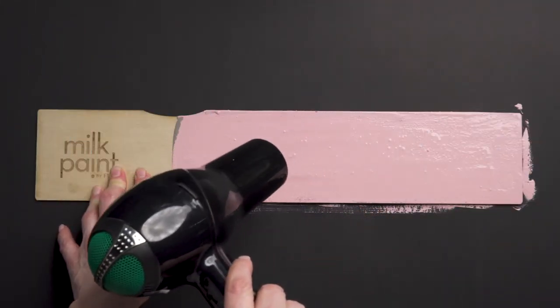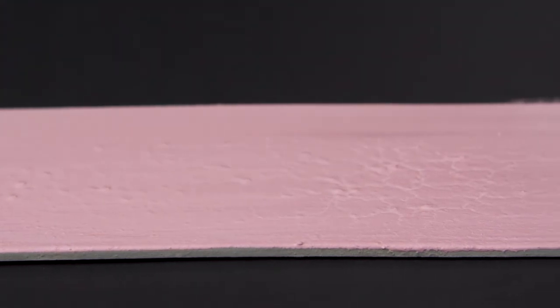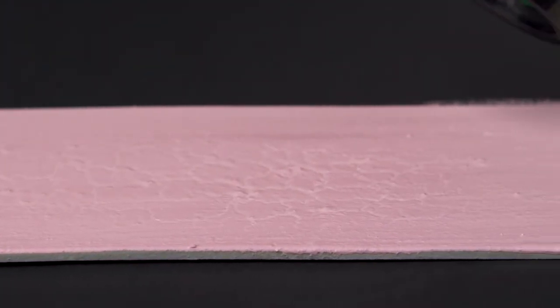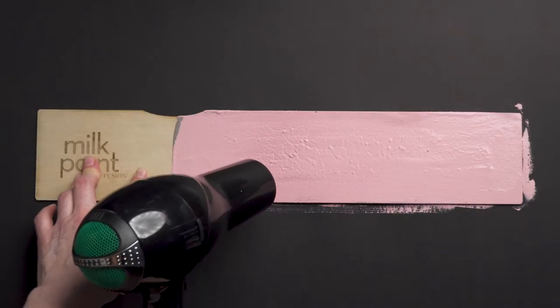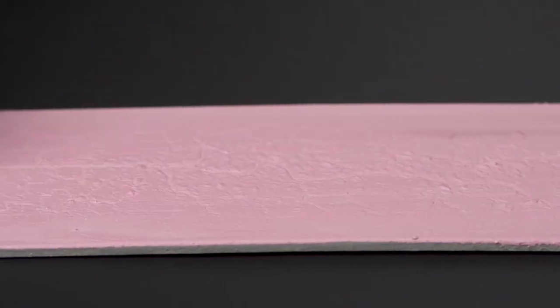Take a hairdryer and dry it on a high heat setting. You can see where we have applied the milk paint thicker, larger cracks will develop. In areas where less paint was applied, the result will be thinner, smaller cracks.